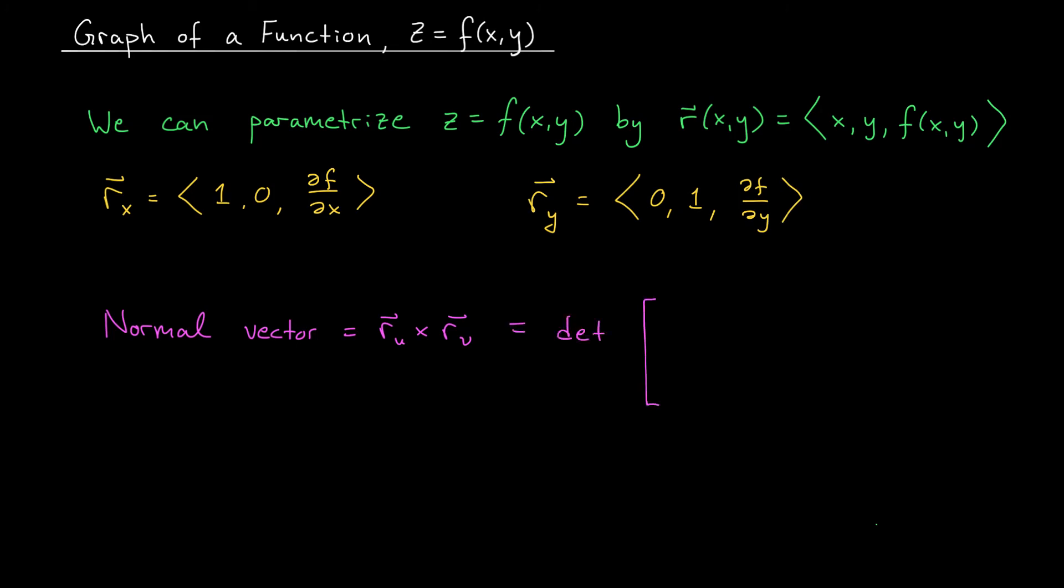If we want a normal vector to our curve, we take the cross product. It's the determinant of i, j, k, 1, 0, partial f by partial x, 0, 1, partial f by partial y. Evaluating this determinant, we get minus partial f by partial x, minus partial f by partial y, and 1. And there you go. This is a normal vector to our curve at a given point xy. Being able to calculate normal vectors is going to be extremely important to us in our next lesson when we talk about surface integrals. And in the special case that we're dealing with a graph of a function z equals f of xy, this little formula is going to save us from doing a cross product every single time.